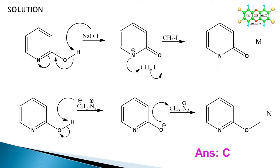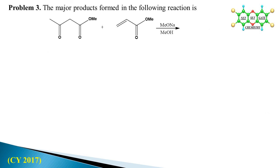Problem number three, from GATE 2017: what is the major product from the following reaction? The reactants are a beta-diketoester and an alpha-beta unsaturated ester.